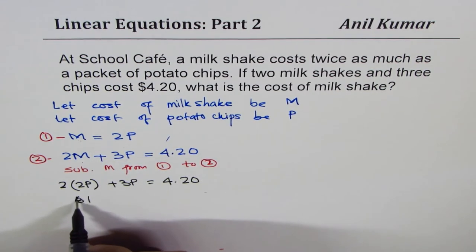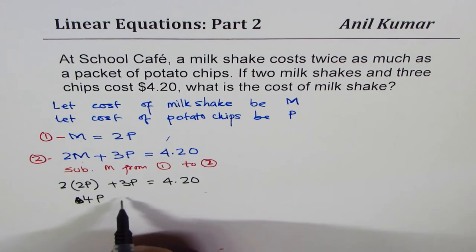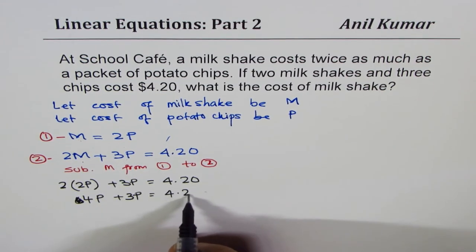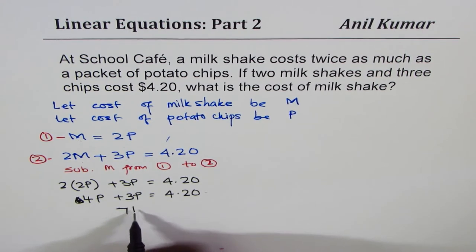4 plus 3 is 7, so 7P equals 420 cents. P will be 420 cents divided by 7, which gives you 60 cents. The cost of potato chips is 60 cents.